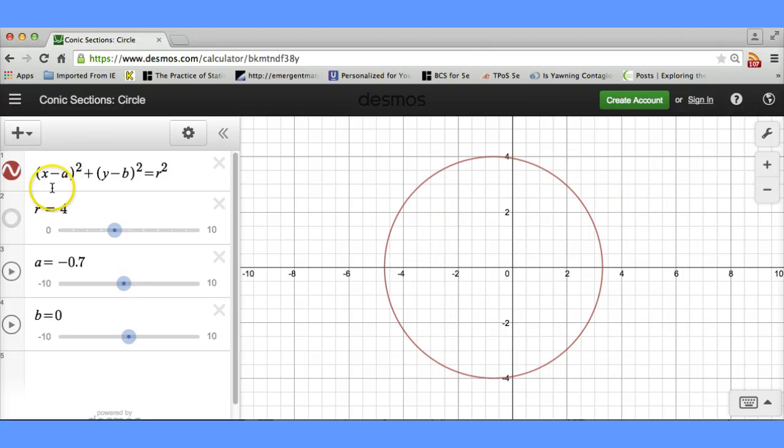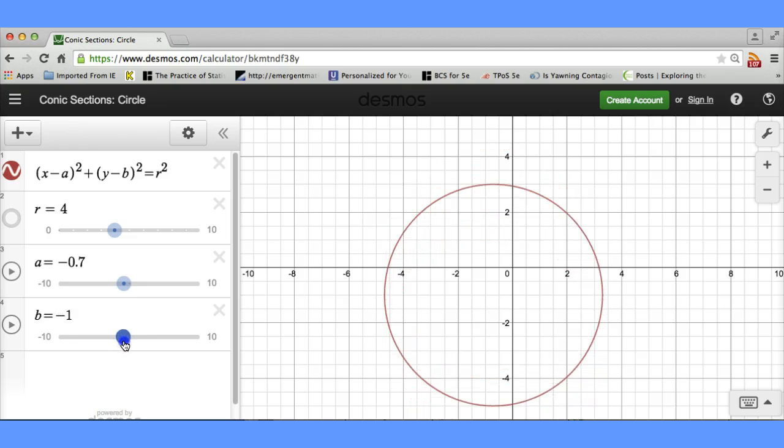So this value of A impacts the x coordinate of points on the circle. And this value of B appears to impact the y coordinates of points on the circle.